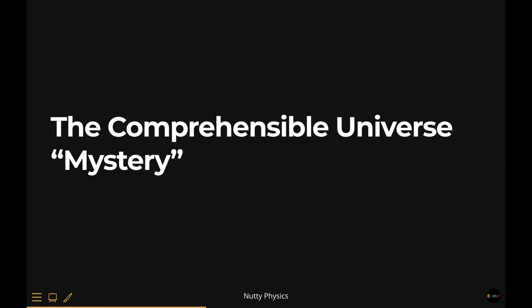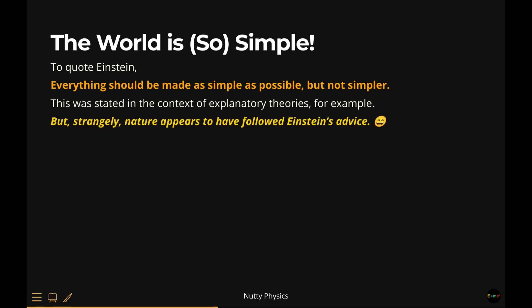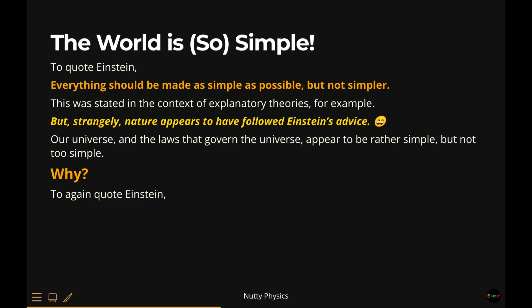Chapter 5: The Comprehensible Universe Mystery. Let's take a quick digression and think about the following somewhat philosophical question. Why does the universe that we live in appear rather simple? The world is so simple. The biggest mystery of our universe is that it is simple, or maybe simple enough. Strangely, nature appears to have followed Einstein's advice that everything should be made as simple as possible, but not simpler. Our universe and the laws that govern the universe appear to be rather simple, but not too simple. Why? You may or may not agree with Einstein, but the biggest mystery of our universe seems to be that it is not that mysterious, after all.